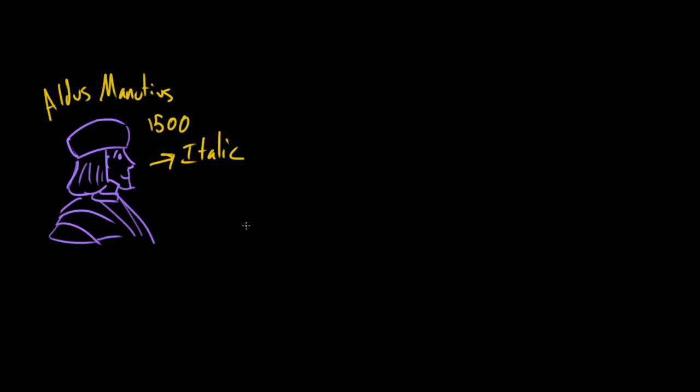What? Yeah, so italic is this word that really just comes from Italy, right, so he's from Venice, which is in modern-day Italy, and what it refers to is text that is kind of on its side, so like this, kind of slopes to the right. That's italic.